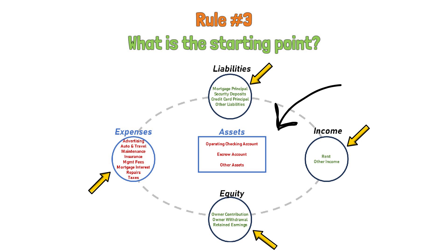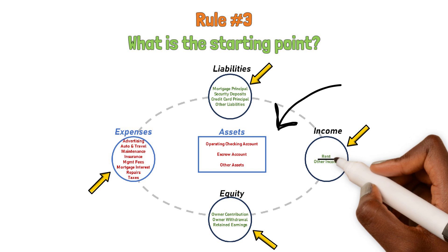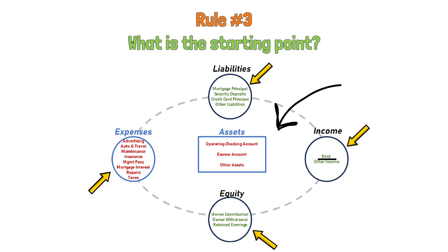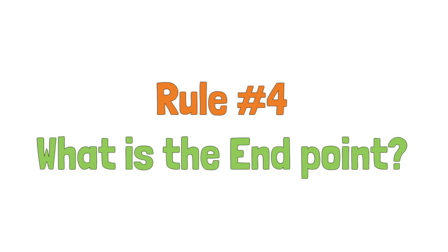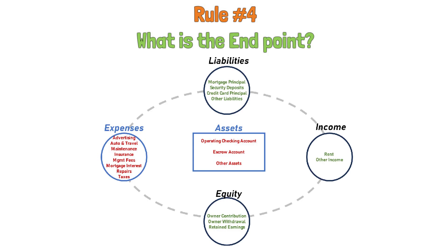It will be simple to select the right one by knowing the type of transaction involved. For example, if a tenant is paying rent, then that is income. So your starting point will be the rent account under the income category. Rule number four is to determine the endpoint of the flow representing the transaction. Once again, if you know the type of transaction involved, then this is easily done. For simplicity, we will assume one starting point and one ending point. In the case of the tenant paying rent, your starting point is the rent account in the income category, and your natural ending point would be the operating account of the business, which is an asset account.